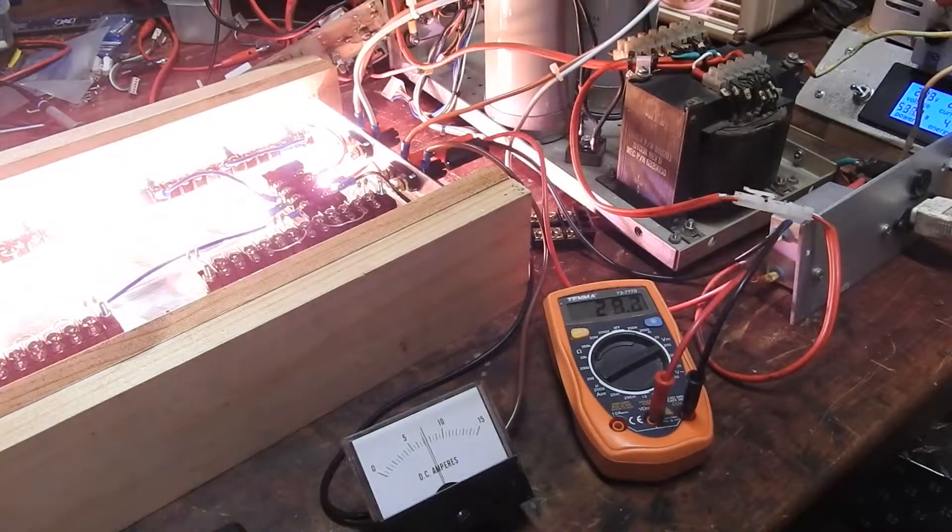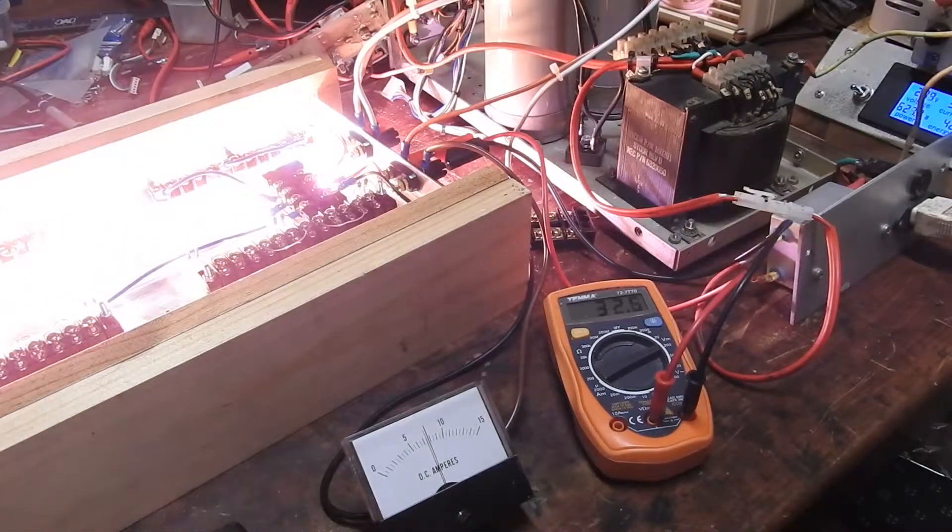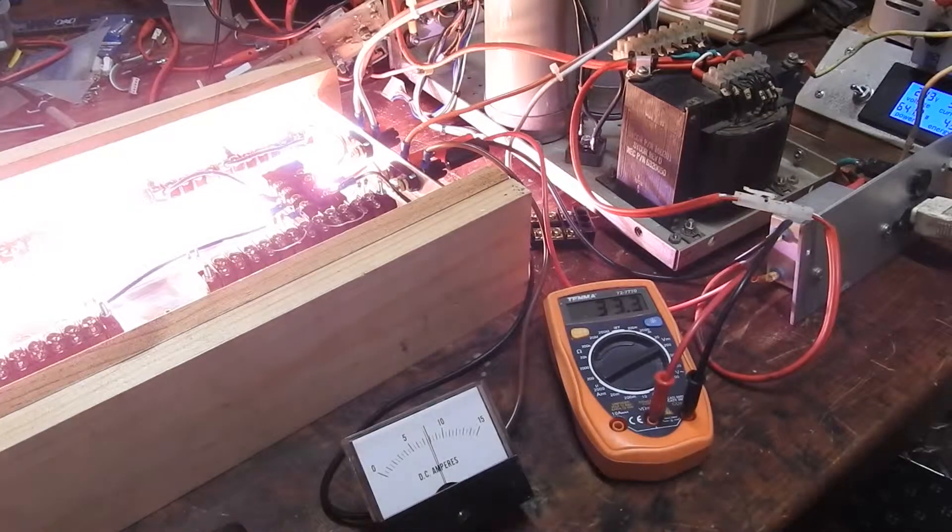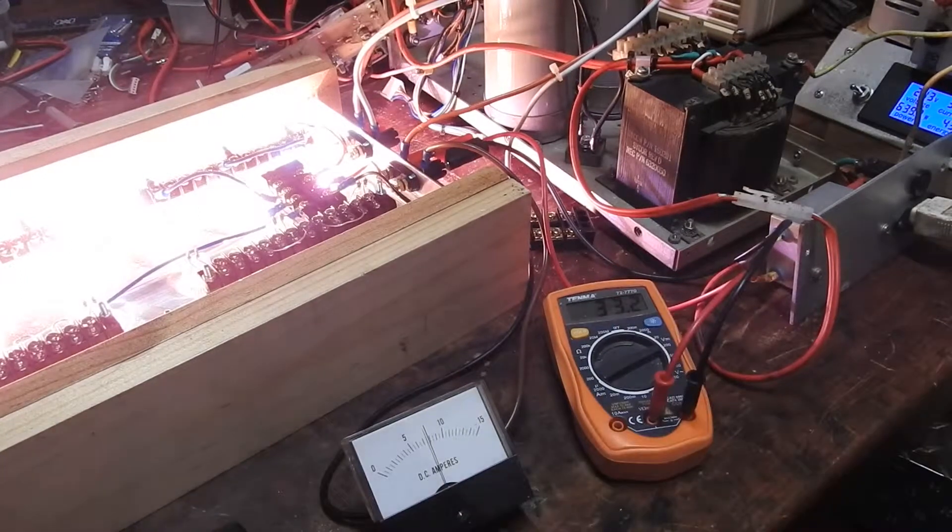That gives us seven and a half amps at 33 volts. That's just measuring the current on one capacitor.